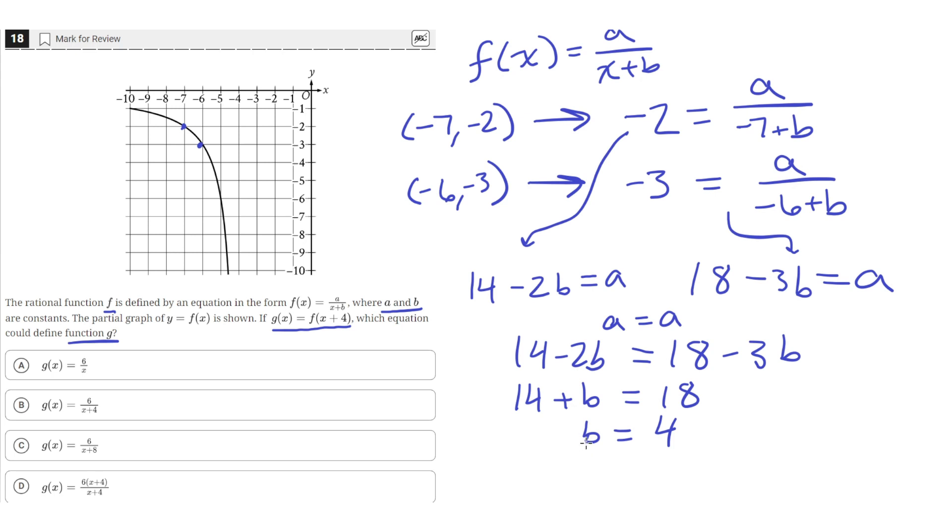Now we have the value of b. Let's plug that into this equation to get the value of a. Negative 2 equals a over negative 7 plus 4, since the value of b is 4. Negative 7 plus 4 equals negative 3. Let's multiply both sides by negative 3 to remove this negative 3 from the denominator. We'll get that a equals 6.